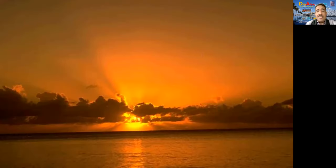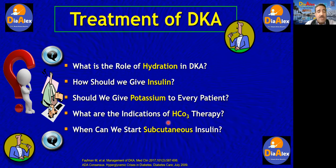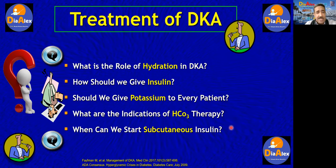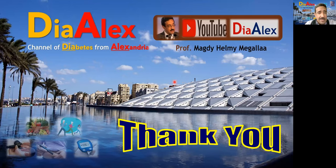To summarize, these are the lines of treatment of DKA: hydration, insulin, potassium supplementation, and bicarbonate only if indicated. Once acidosis resolves and the patient is shifted to subcutaneous insulin, they can be discharged from the ICU and followed at the outpatient clinic for insulin dose titration. Thank you very much for your attention.